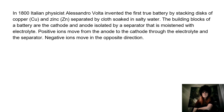The building blocks of a battery are the cathode and anode isolated by a separator that is moistened with electrolyte. Positive ions move from the anode to the cathode through the electrolyte and the separator. Negative ions move in the opposite direction.